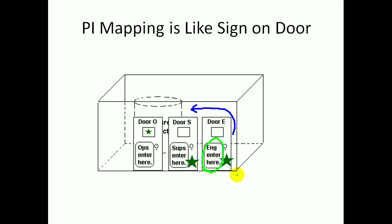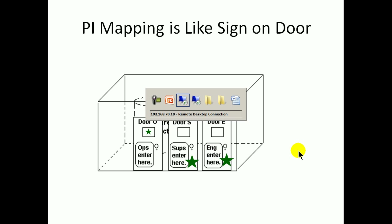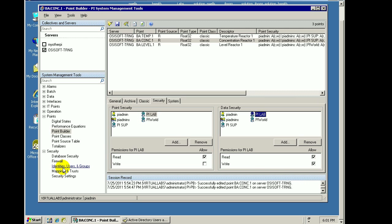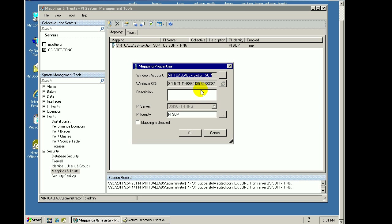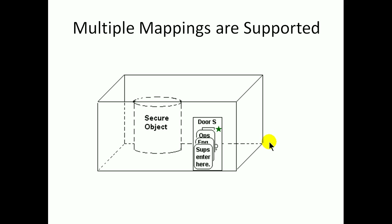When you configure a mapping, it's like drawing a little sign on that identity saying, okay, everybody who's in this Active Directory group, you get access. So for the Supervisors here, we've put a little sign on this door saying, this is the mapping that says, Supervisors, you get access to door S. In the PI world, this is actually done through mappings. When I configure a mapping, what I'm doing is saying this Windows credential is associated with this PI identity — it's basically hanging something on that door. And you can hang multiple signs on the same identity, so there's no problem at all with having multiple Active Directory groups associated with a PI identity.